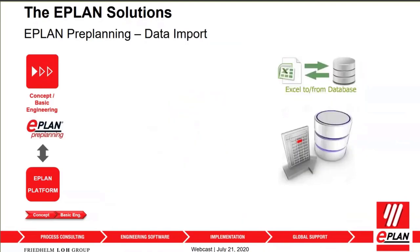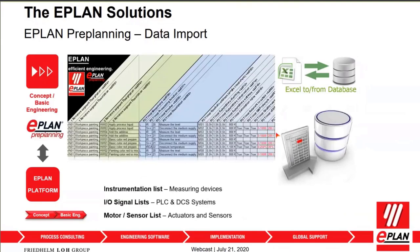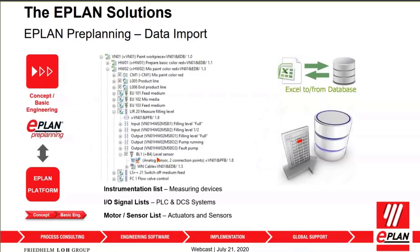ePlan preplanning can also import and export data. You can use Autodesk Revit to capture building information and send it to preplanning to import and continue your controls design. If you have an instrumentation list, motor list, sensor list, I/O list, or signal list in Excel, all of those can be imported into preplanning to create a structured view of your system, from which you can drive all of your detail engineering down to your control cabinet very easily.